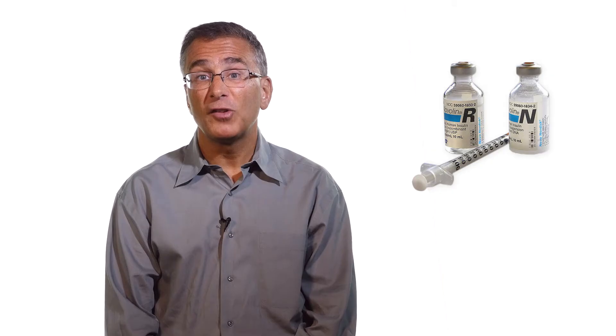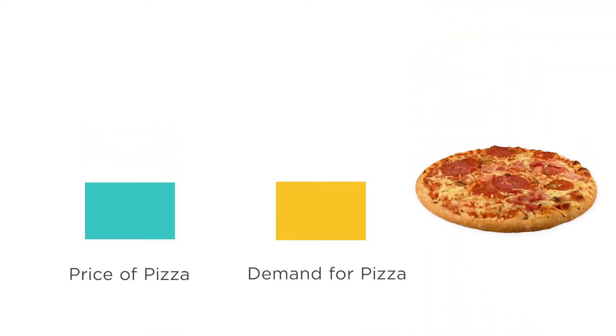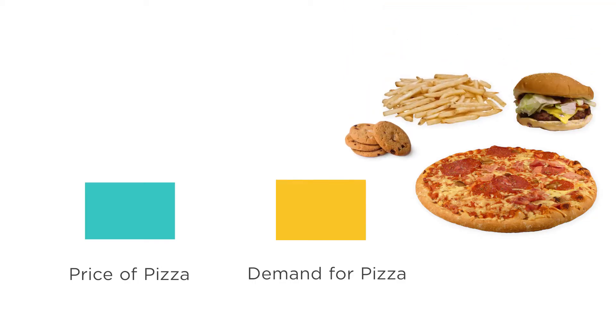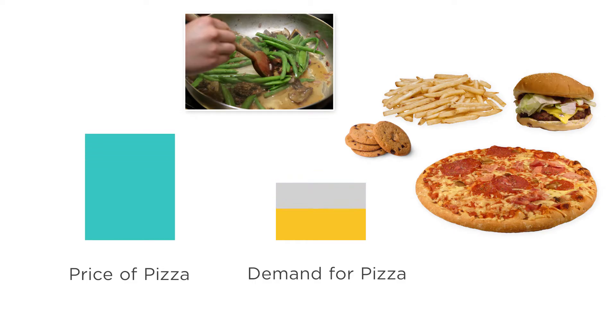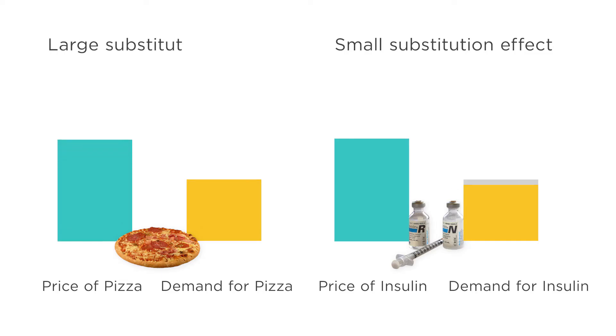Consider insulin. Your body produces insulin to regulate blood sugar, but for many people this process doesn't work well — that's what causes diabetes. People with diabetes need artificial insulin to compensate, and without it they could die. There's no other medicine that works, so if the price of insulin goes up, a diabetic is unlikely to buy much less of it. Now consider pizza — it's one of many goods you can consume when hungry. You could eat cookies, a burger, fries, or cook at home. So goods like insulin have a small substitution effect because there aren't good alternatives, while goods like pizza have a large substitution effect because there are. No matter the size, the substitution effect always leads to a shift away from a good as its price goes up.